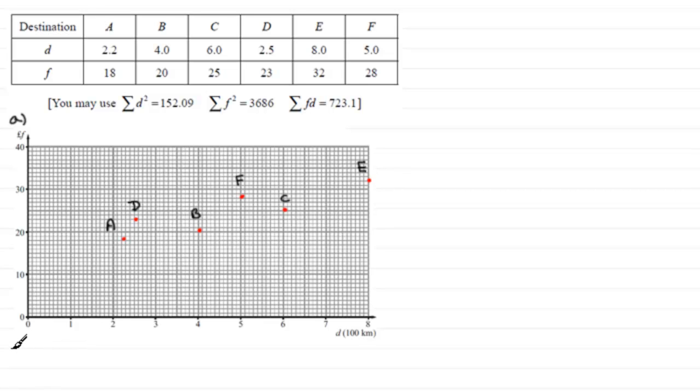Now in part B, we're asked to explain why a linear regression model may be appropriate to describe the relationship between F and D.